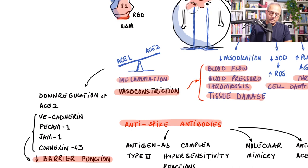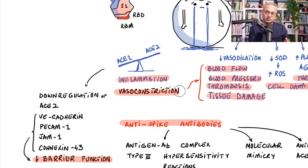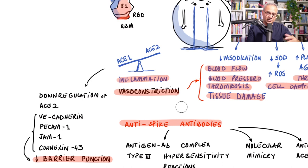When ACE2's anti-inflammatory and vasodilatory behavior is taken away by spike protein binding, you are left with pro-inflammatory and vasoconstrictive behavior from ACE1 — both damaging. ACE1 is a very potent vasoconstrictor, meaning hypertension, blood flow issues, and vasoactivity problems result.